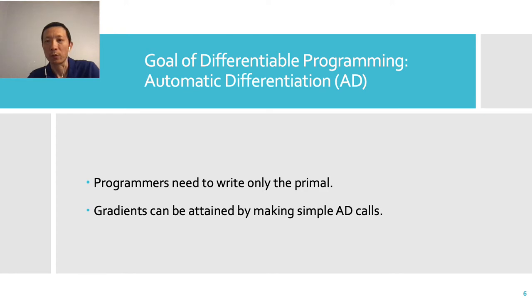Differentiable programming comes to rescue. Its goal is to enable automatic differentiation. With the differentiable programming language, programmers need to write only the primal code. The gradients will be computed automatically through simple AD calls.